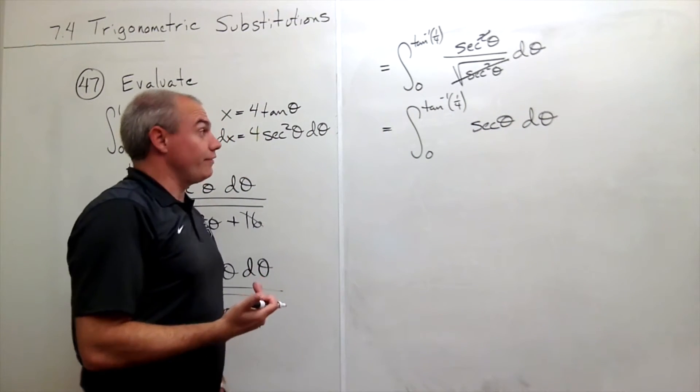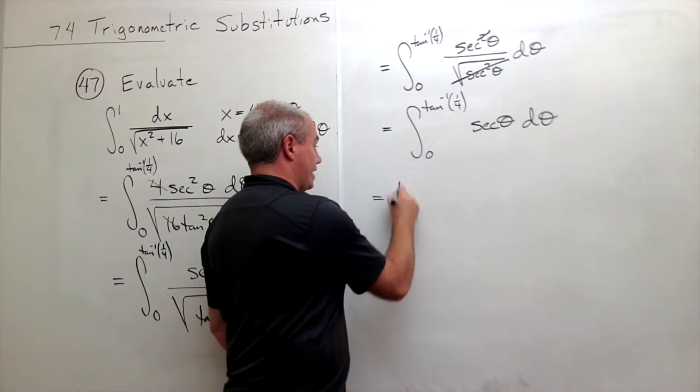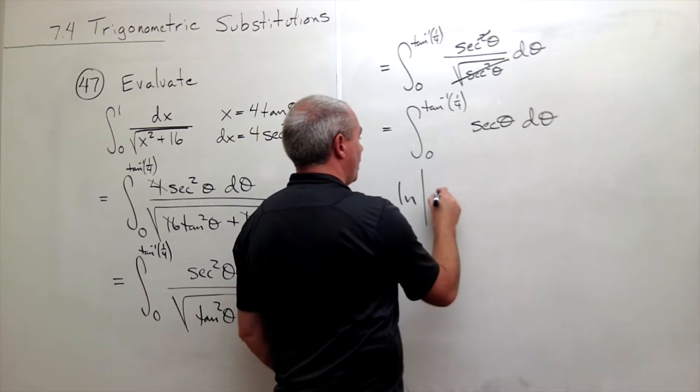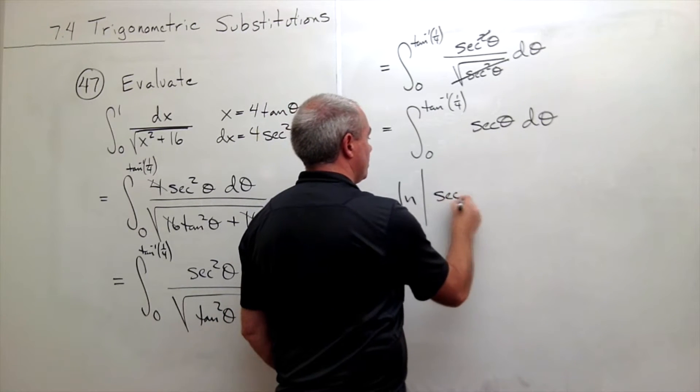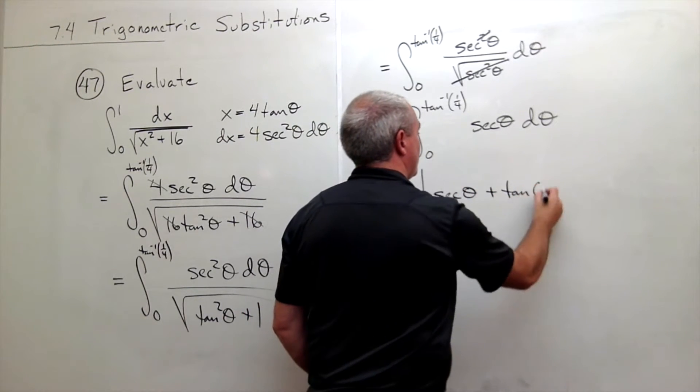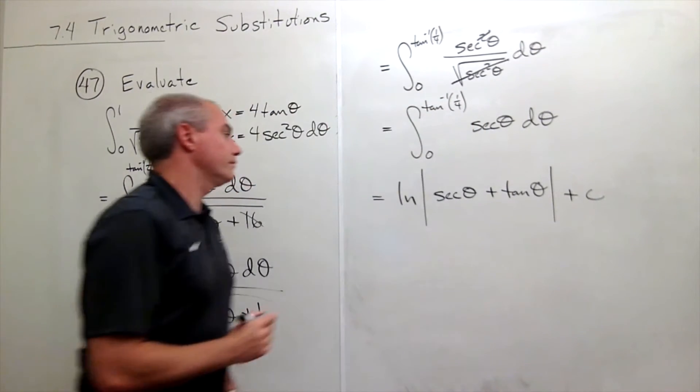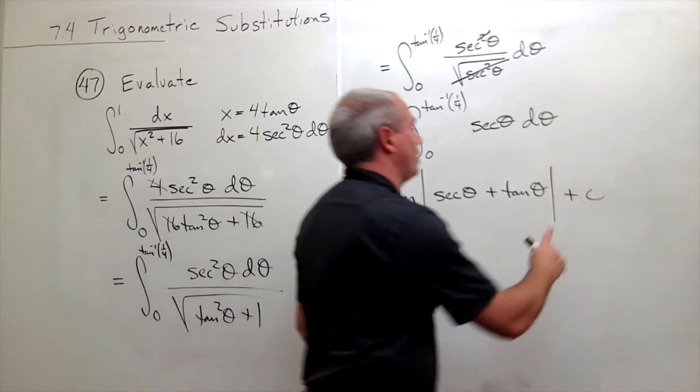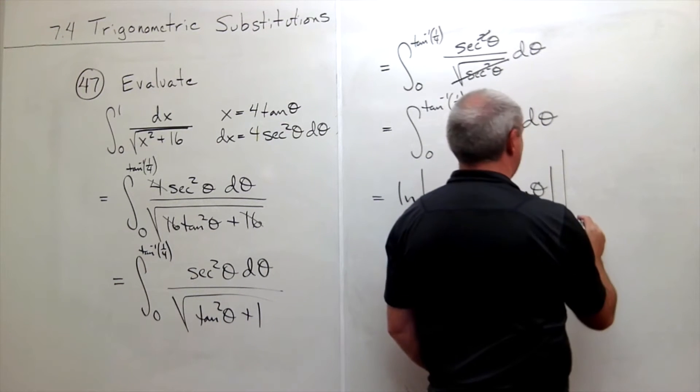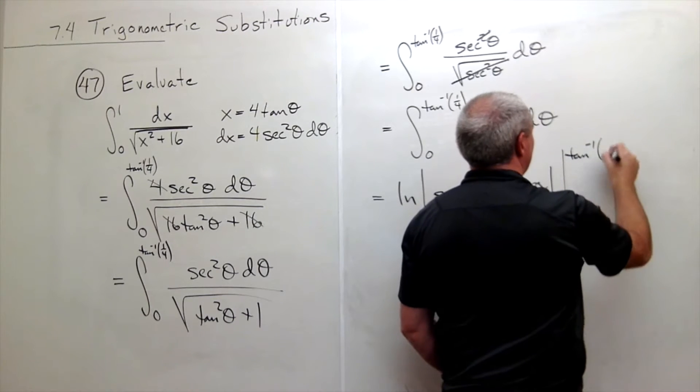The antiderivative of secant theta, we need to remember, it is ln of the absolute value of secant of theta plus tangent of theta. We want to evaluate that from 0 to tan inverse of 1 fourth.